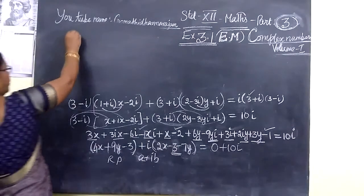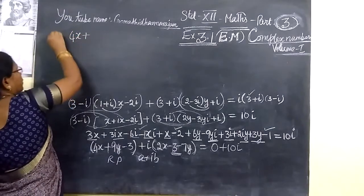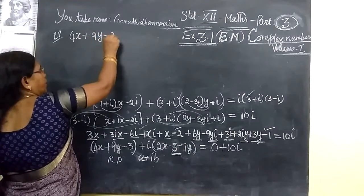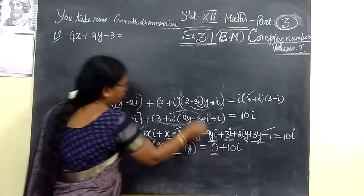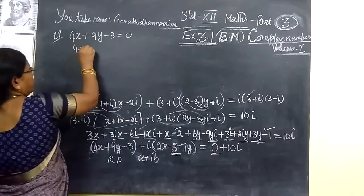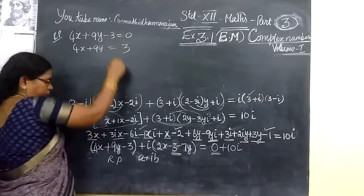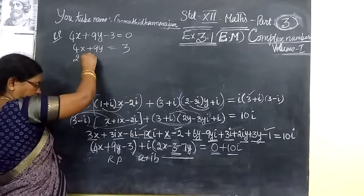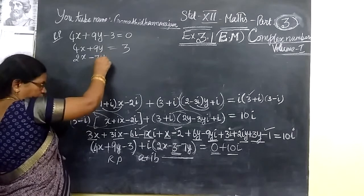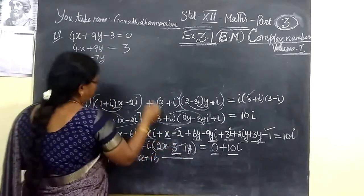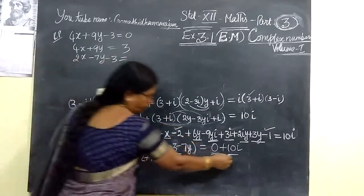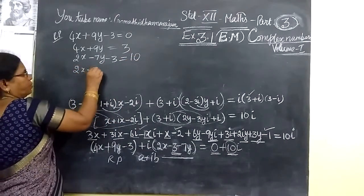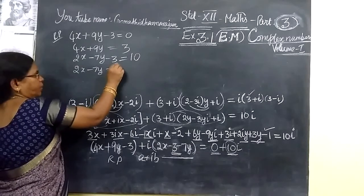When we equate the real part and the imaginary part: the real part gives 4x plus 9y minus 3 equal to 0, so 4x plus 9y equals 3. For the imaginary part, the right-hand side gives 10, so 2x minus 7y minus 3 equals 10, which means 2x minus 7y equals 13.